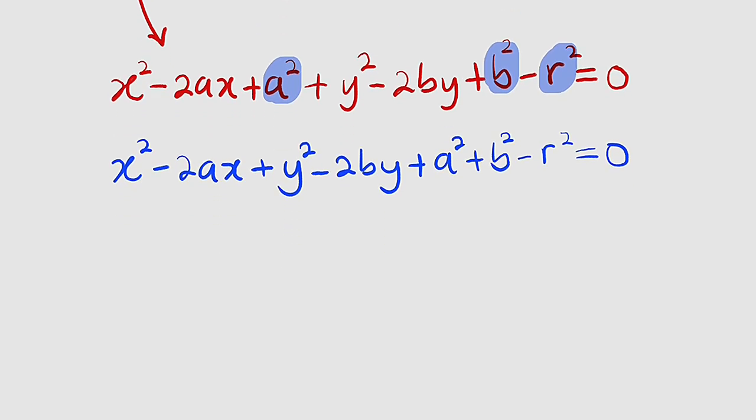I am going to do another substitution here by letting a to be equal to negative f and b to be equal to negative g. So whenever we have a we are going to replace it with negative f and b with negative g.